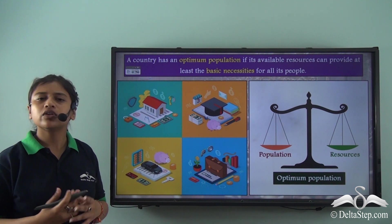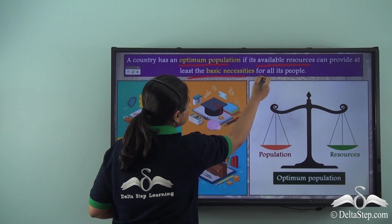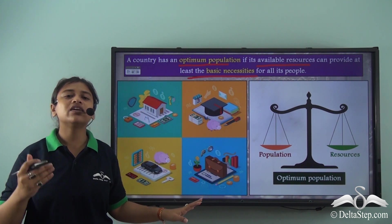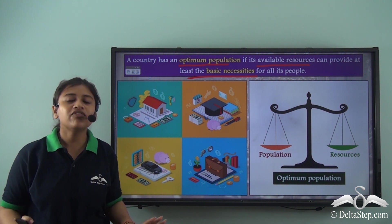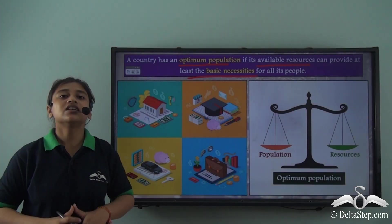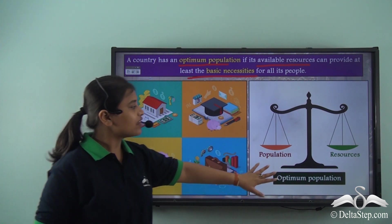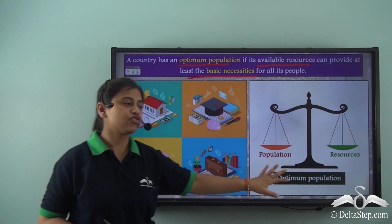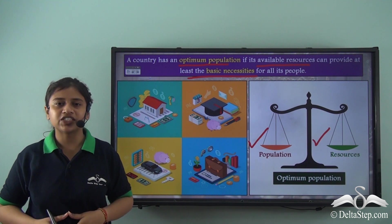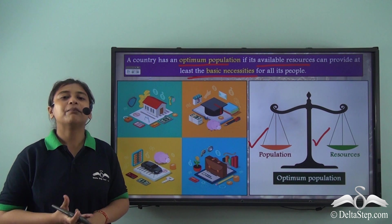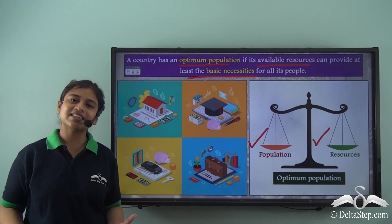There is also a situation of optimum population. Optimum population is a situation in which available resources can provide at least basic necessities for all people — neither over-availability of resources going to waste, nor low availability of resources. There are enough resources for the number of people living in that area, creating a good balance between resources and population. In a situation of optimum population, education, medical infrastructure, government policies, and employment are all nicely balanced, and people are mostly satisfied.